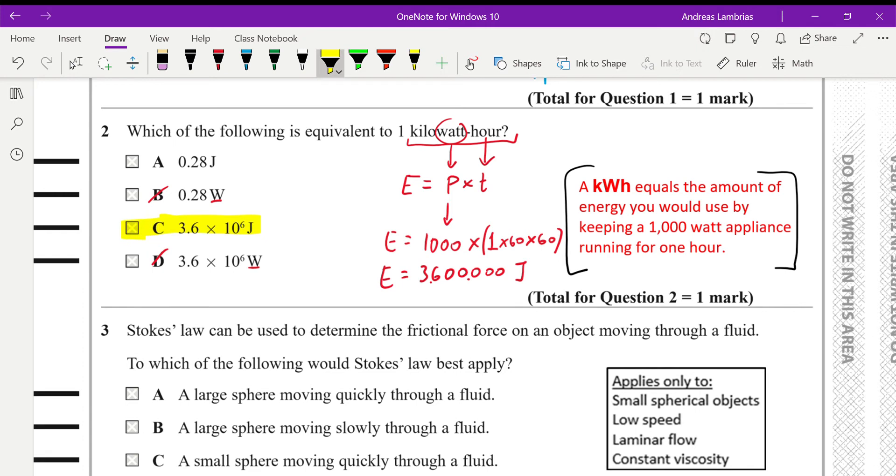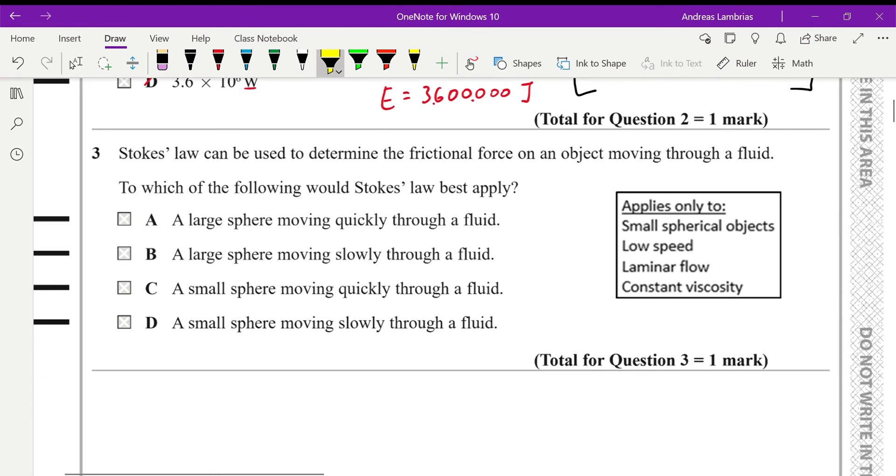Question three: Stokes' law. Now for Stokes' law, which is the force, the drag force, the frictional force on an object moving through a fluid. So Stokes' law is something we usually see when we have to deal with viscosity questions. And in order for the Stokes' law to apply there's a few conditions. So I'm summarizing the conditions in that box. So you can see that it applies for small spherical objects when the objects are moving at low speed, when the flow is maintained to be laminar flow, and when the viscosity of the fluid is constant, that means is not affected by the temperature, because we know that viscosity changes with temperature.